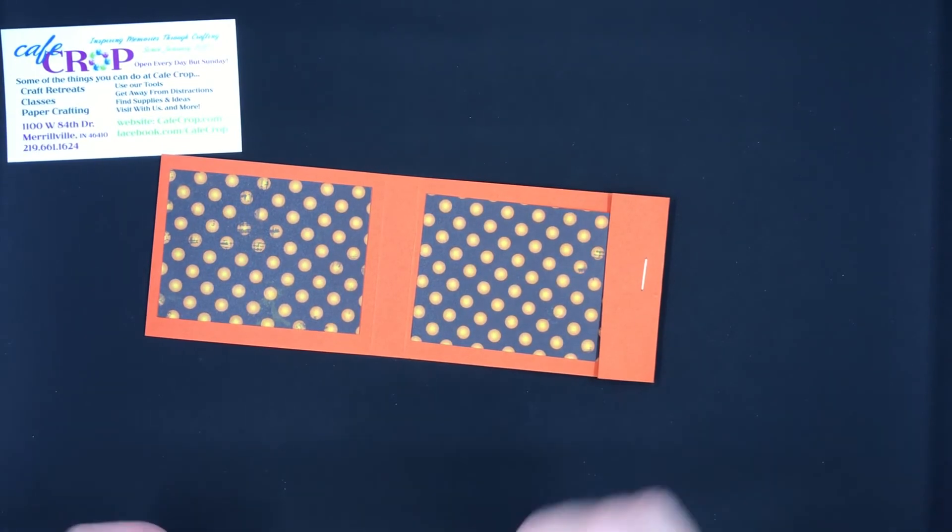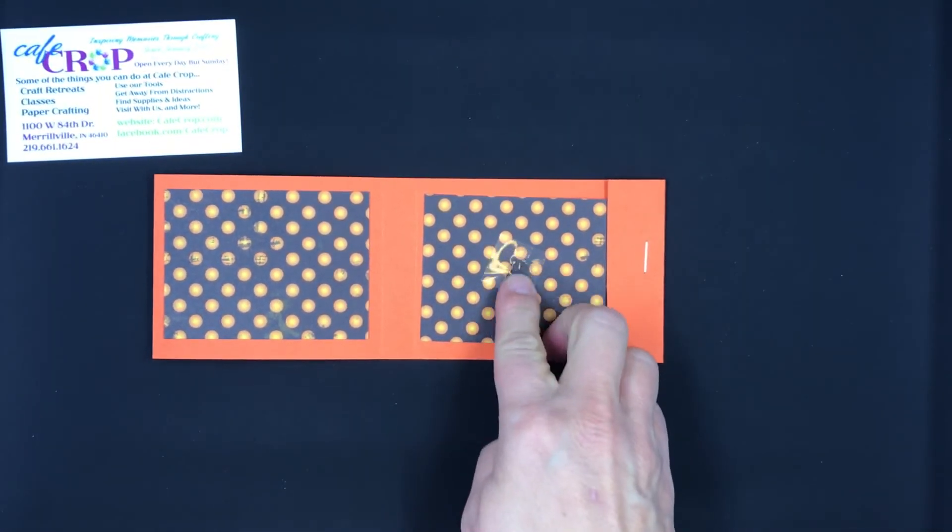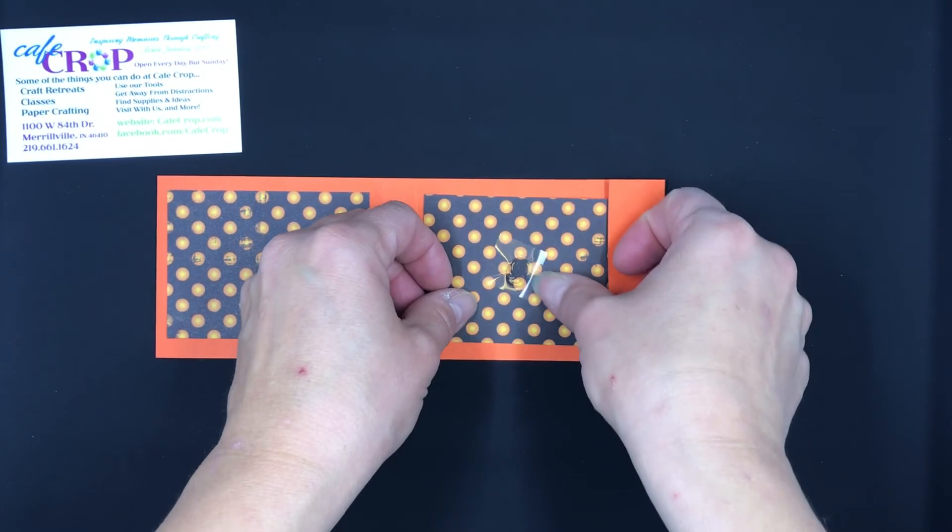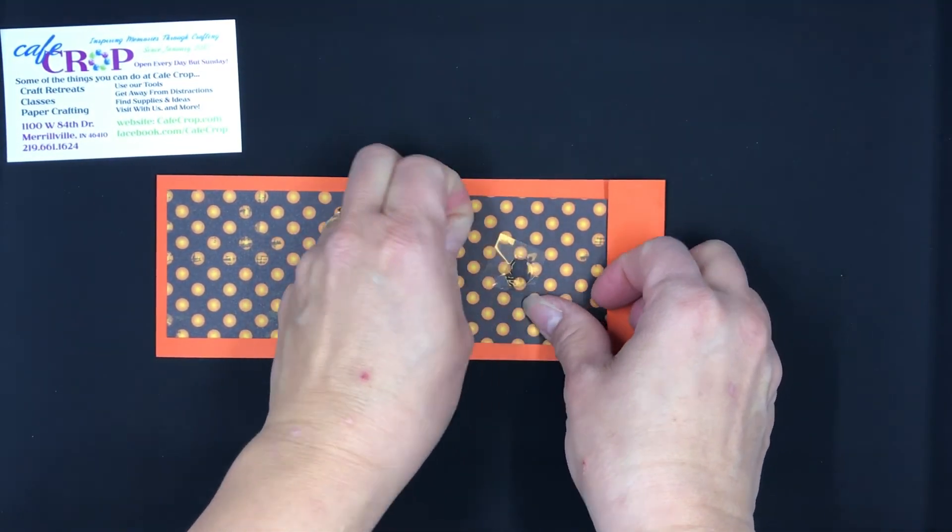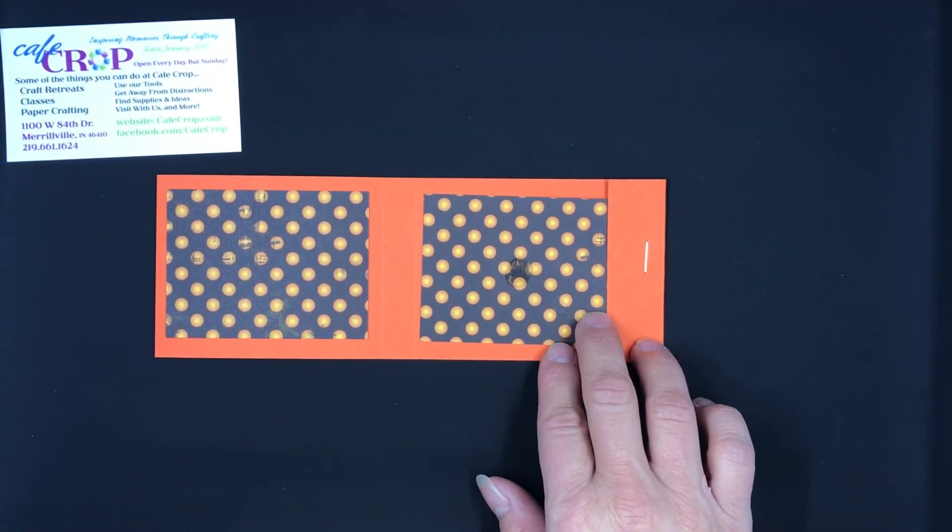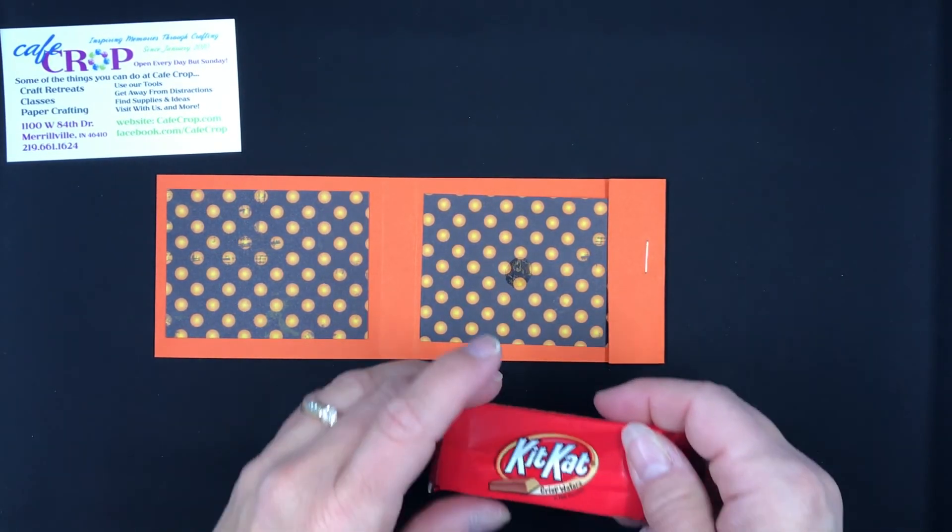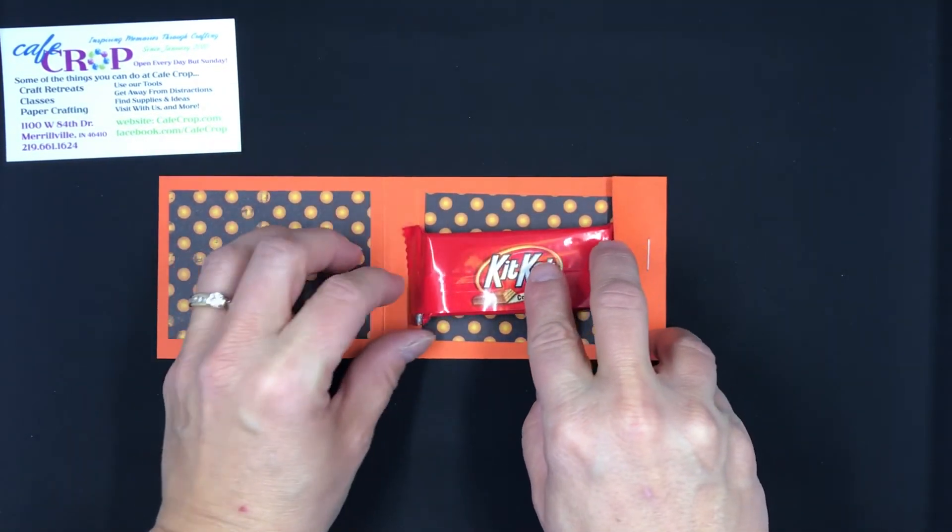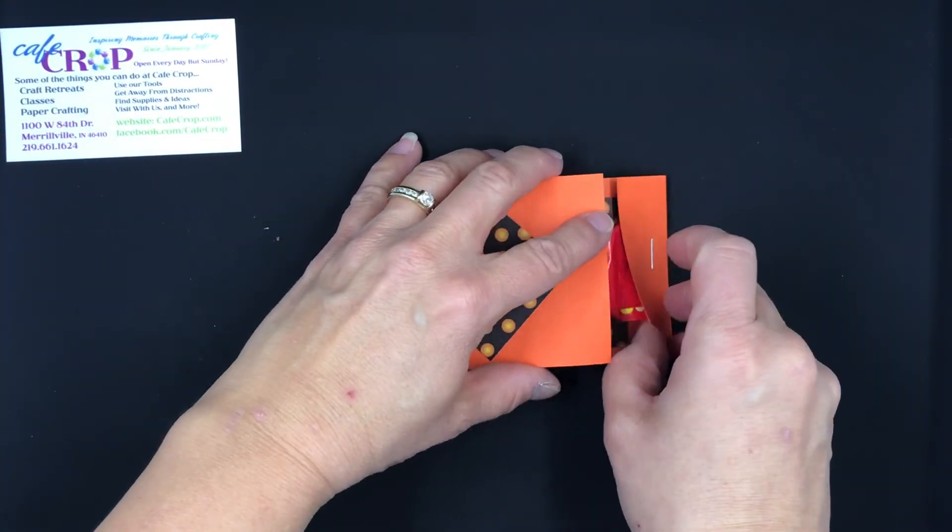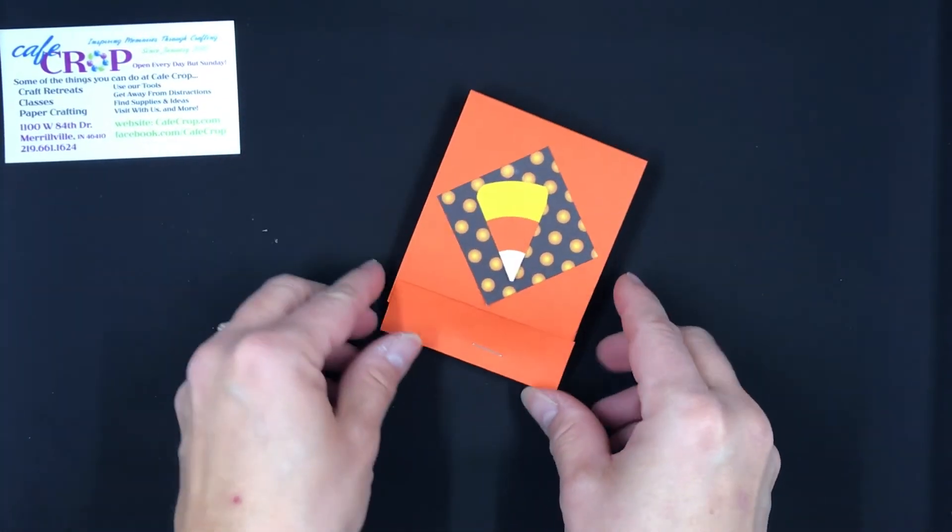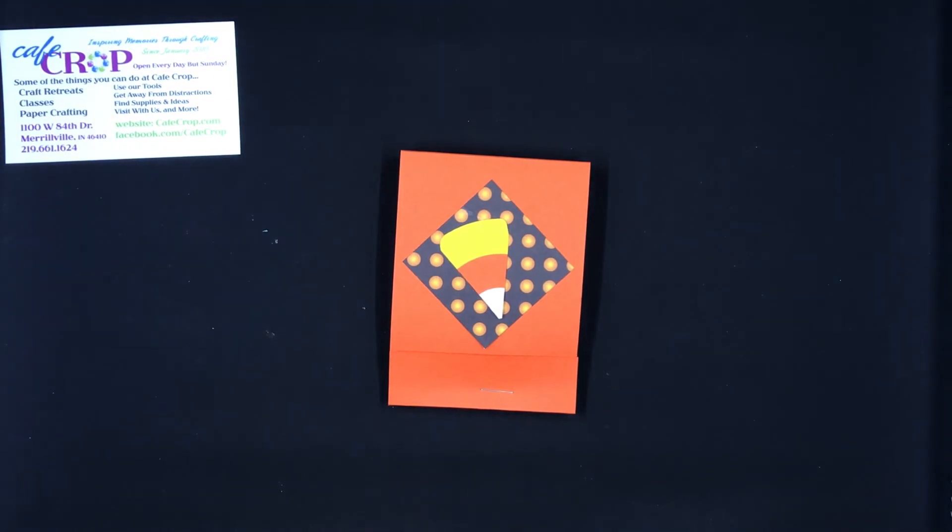So I'm going to just take a glue dot, stick it right in the middle here of the bottom portion, pull off that handy little plastic piece, and pop in my piece of candy. Tuck that in and I have my completed favor.